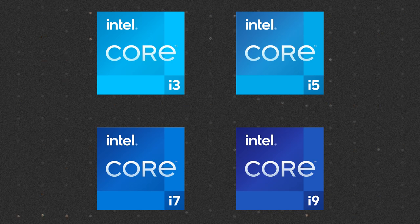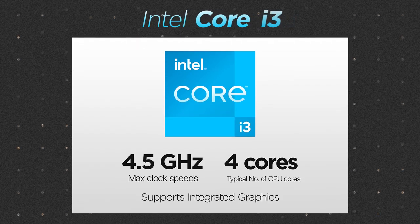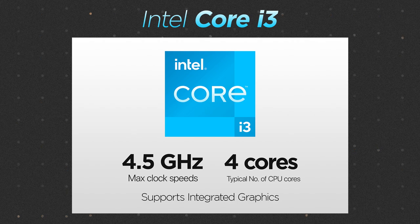In 2023, Intel is in their 13th generation of Intel Core processors, which include all i3, i5, i7, and i9 processors. The i3 processors are Intel's entry-level option, designed for basic computing tasks like web browsing, email, and office productivity. Core i3s typically have four cores with max clock speeds of around 4.5 GHz. These processors also have integrated graphics, which can be suitable for casual gaming or video streaming. Core i3 processors are generally the most affordable option, making them a good choice for budget-conscious users.